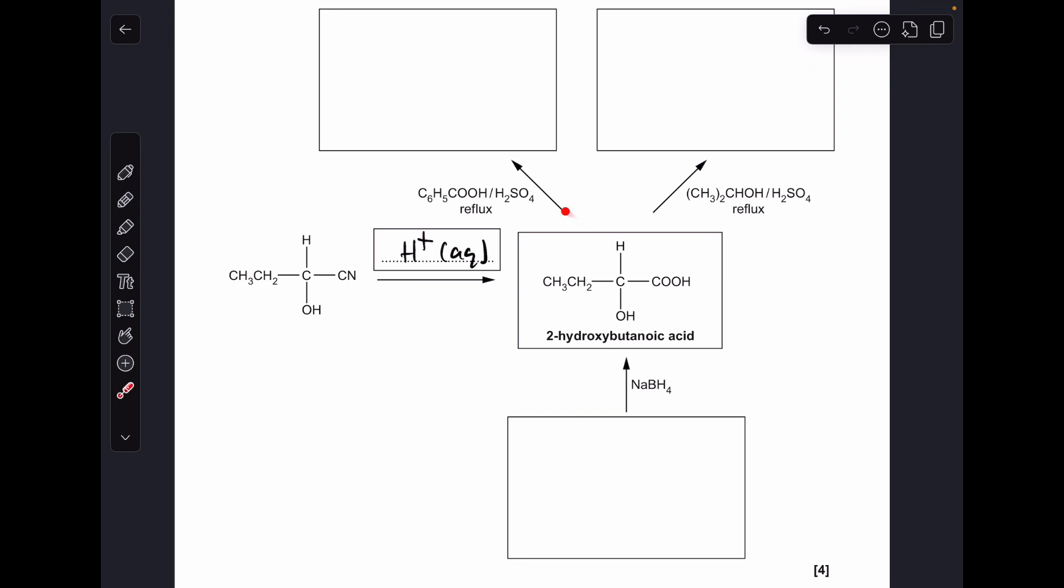Next one we'll look at is this reaction here. So we've got carboxylic acid, benzoic acid, and sulfuric acid with heat. So that's going to be an esterification reaction. We're going to get an ester forming with this alcohol group here. So there's the structure for that one, and then moving on to this reaction here. We're reacting this alcohol, propane-2-ol, again sulfuric acid and reflux. So we're going to get another esterification reaction, but this time the ester group is going to form with the carboxylic acid group there.